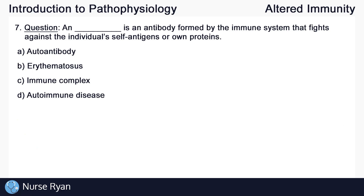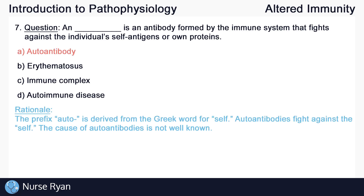Question number seven: a blank is an antibody formed by the immune system that fights against the individual's self-antigens or own proteins. The answer is A, autoantibody. The prefix auto is derived from the Greek word for self, so autoantibodies fight against the self. The cause of autoantibodies is not well known.